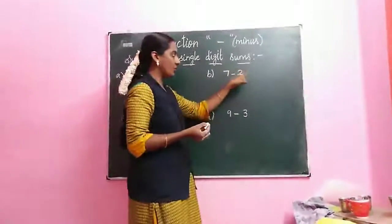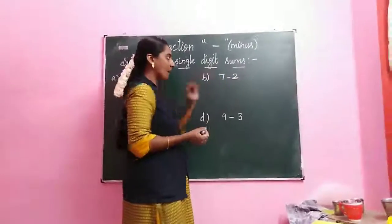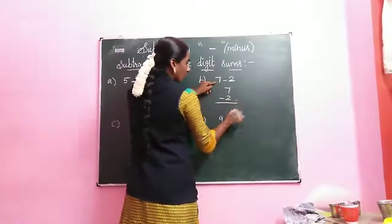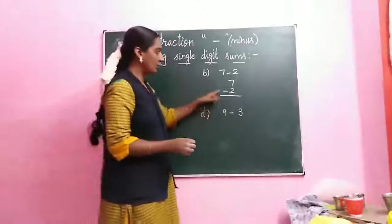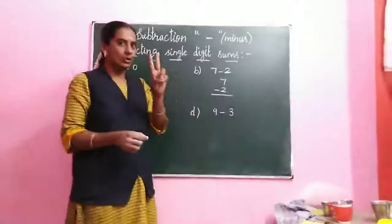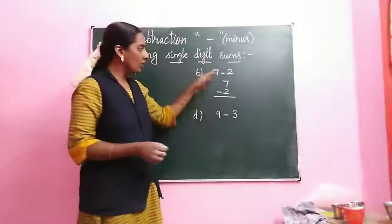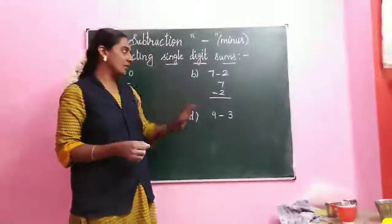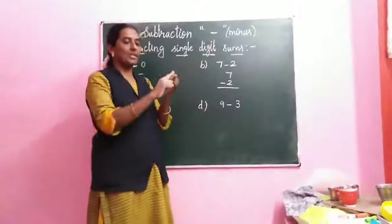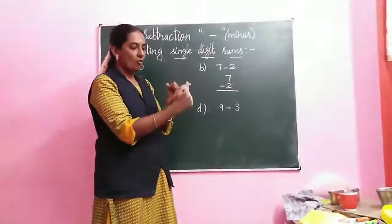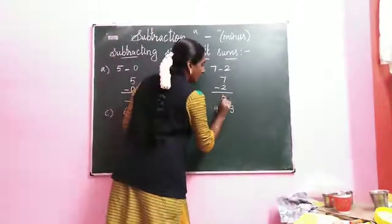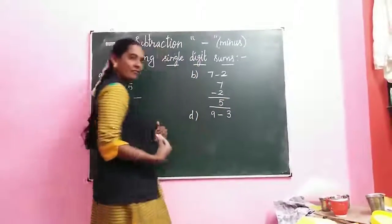Next sum: 7 minus 2. First, take the bottom number 2. Count after 2: 3, 4, 5, 6, 7 — stop at 7. How many fingers? 5 fingers. So the answer is 5.